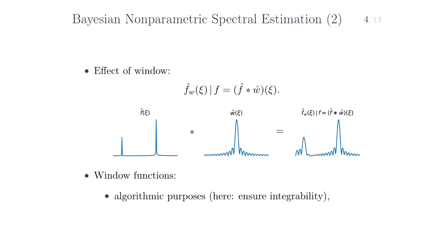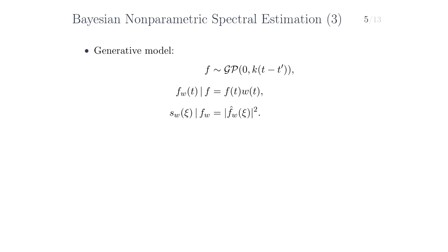The use of a window function is very commonplace in signal processing. They can either be used for algorithmic purposes — for example, in this case we use them to ensure integrability of our signal — or they can arise as a consequence of acquisition devices. For example, in practice we can only observe a signal for a finite amount of time, which means that in some sense we always have some kind of rectangular, perhaps very wide, but finitely wide window function. And sampling is often modeled by a window function that is an impulse train, which is often denoted by the SHA symbol.